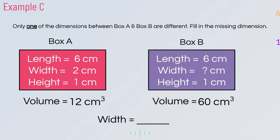In example C, only one dimension differs between box A and box B. The length is six and six, the height is one and one, and we need to find the missing width. The original width is two, and we're given volumes of 12 and 60. To find the scale factor, we divide 60 by 12, which gives us 5. So we multiply 2 times 5 to get a width of 10 centimeters.